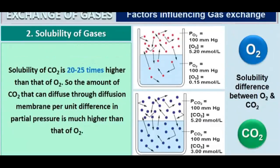The pCO2 in oxygenated blood is more than in the alveolus, so CO2 diffuses to the alveolus. The solubility of CO2 is 20 to 25 times higher than that of oxygen, so the amount of carbon dioxide that can diffuse through the diffusion membrane per unit surface area at a given partial pressure is much higher than that of oxygen.